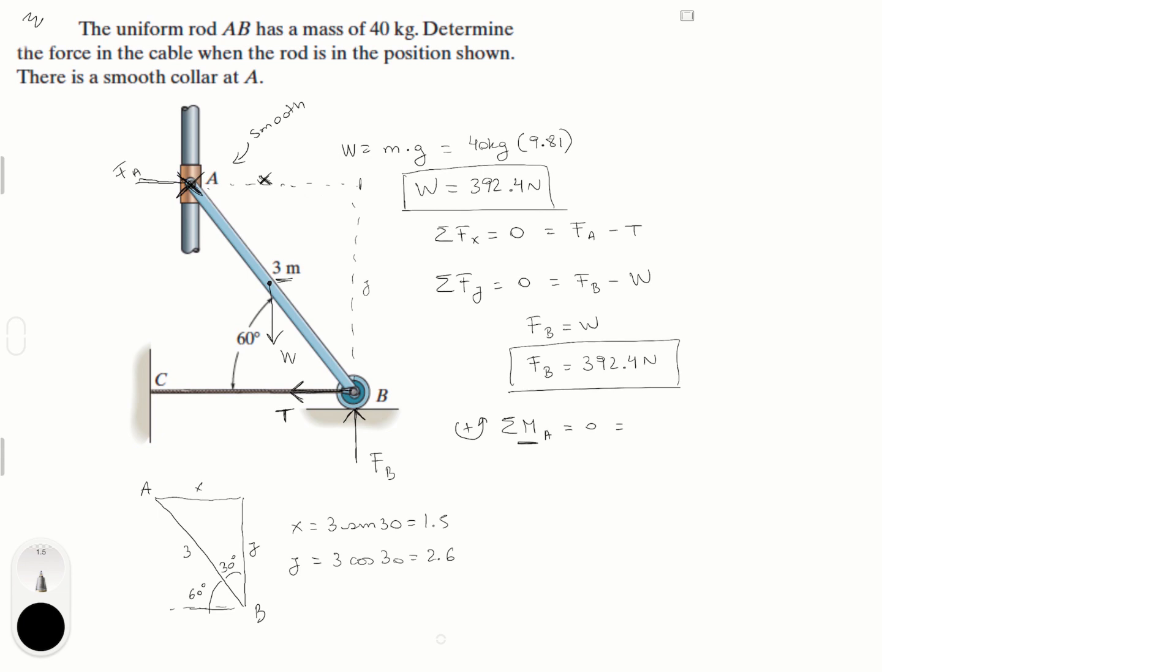So back to our equation, sum of the moments at A right here is equal to 0. So you know that the weight is creating a moment of the weight times half of X. Half of X is... X is 1.5 so half of X is 0.75, and that is negative because it's trying to turn it clockwise.